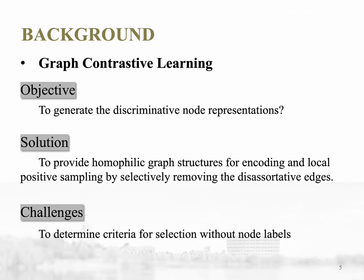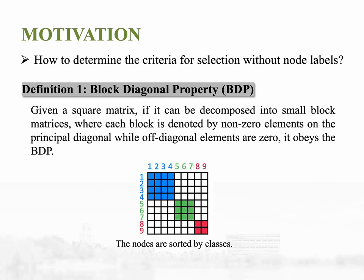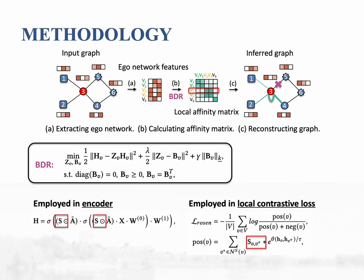Therefore, it is crucial to feed the encoder and positive sampling of GCLs with homophilic graph structures. This paper presents a novel GCL framework named Graph Contrastive Exploring Universality Rosen, designed to achieve this objective.